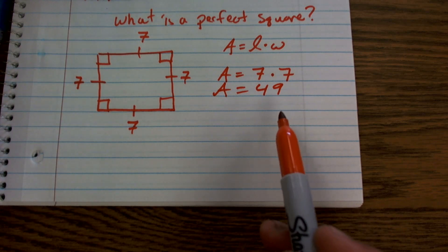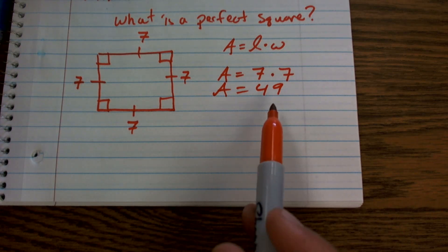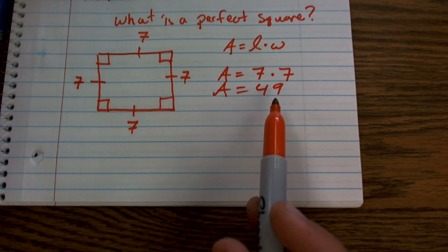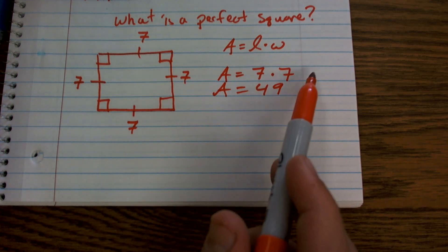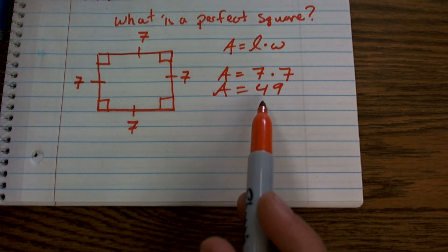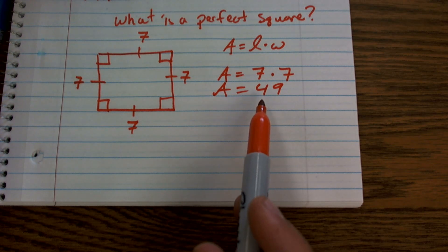So what we say is, 49 is what we call a perfect square because it has the same number multiplied by itself equals 49.